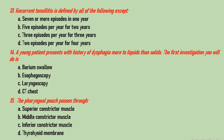Question number 13: recurrent tonsillitis is defined by all of the following except which? Options are 7 or more episodes in one year, 5 or more episodes per year for 2 years, 3 episodes per year for 3 years, and 2 episodes per year for 4 years. The correct answer is 3 episodes per year for 4 years. Options A, B, and C are correct criteria.